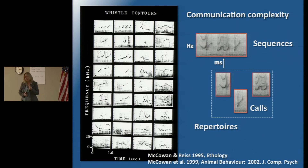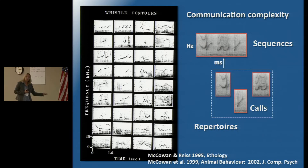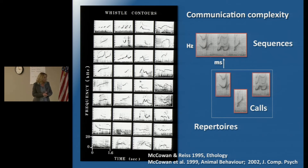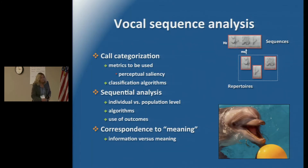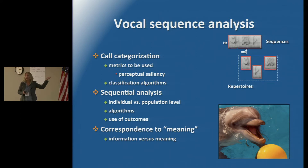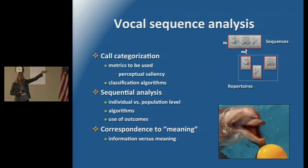We were particularly interested in looking at the level of the repertoires, or the non-signature calls, and how they might be structured to represent the complexity we see in their social behavior. This is based on work we did in the mid to late 1990s, and we are currently following up with another large data set. What I'd like to talk about first are some of the issues with studying vocal sequences and analyzing them effectively in animals such as dolphins. Call categorization seems to be number one on our list.